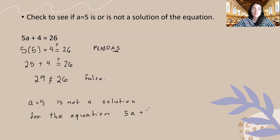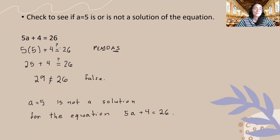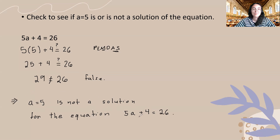5a plus 4 is equal to 26. I hope this is making sense. Why did we plug in 5? Because this was a value given to us in the problem. Why are we writing a question mark? Because we want to remind ourselves if the left hand side is equal to the right hand side. Why did we strike through the equal sign? Because these two values are not equal. Why did we write false? Because these two values are not the same. And why did we write a statement? Because we are concluding if a is equal to 5 is or is not a solution for the equation.